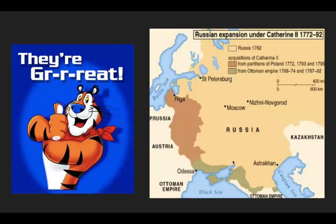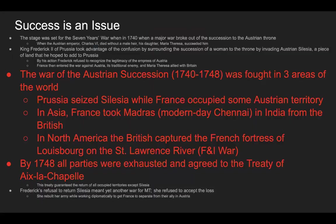Here is a map showing Russian expansion under Catherine. What might not seem like a lot of land — shown in olive green — was actually vital because the Black Sea is an important trade route. And with that, the stage is now set for the Seven Years War.